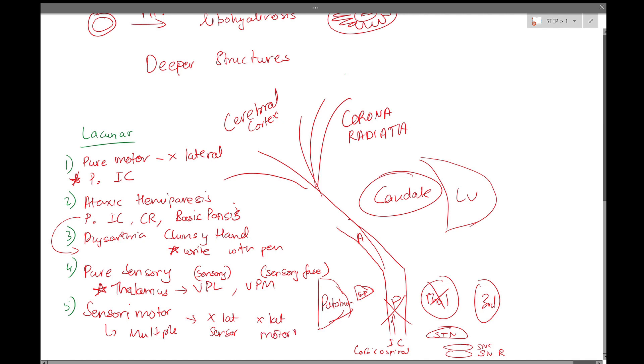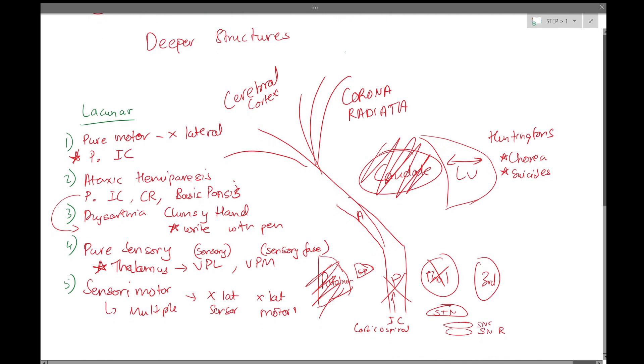A few more high yields that we can talk about in this area while we're here. Caudate and putamen lesions, along with expansion of the lateral ventricle, is seen in Huntington's. The most important thing in question stems to look for is, of course, chorea, that's symbolic of Huntington's, along with possibly the mention of suicides in the family, because suicide is actually the most common way patients with Huntington's pass away.